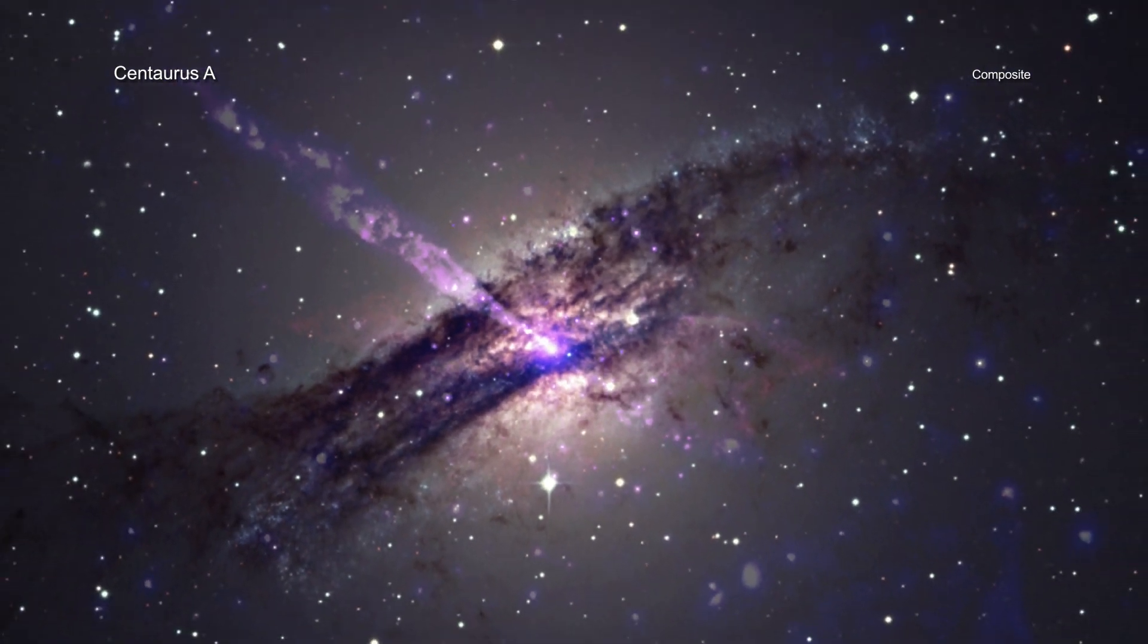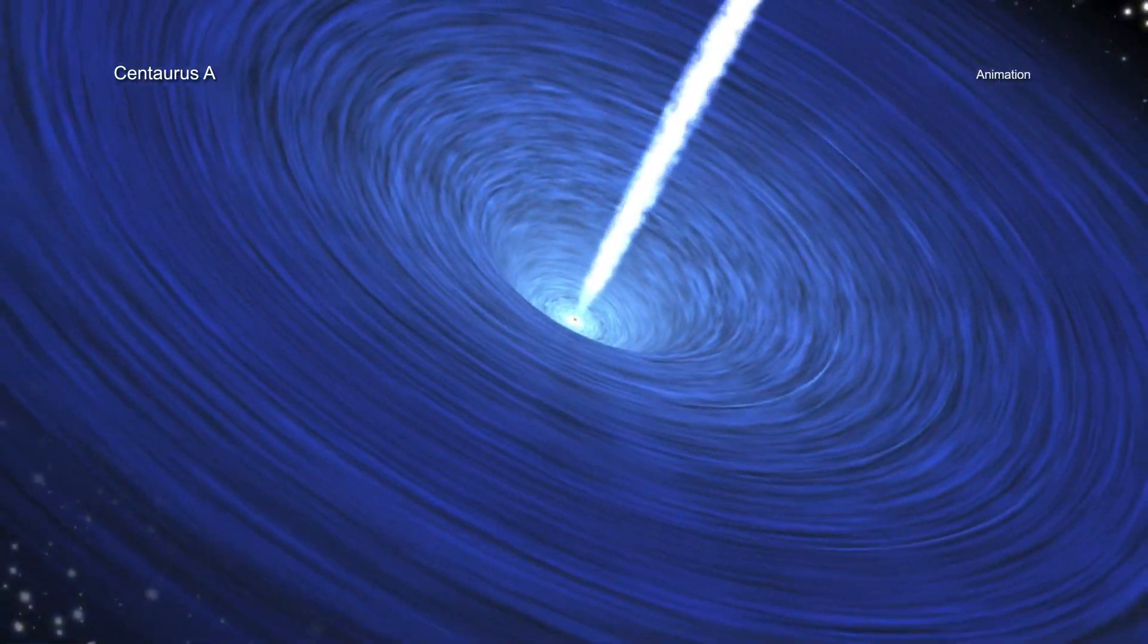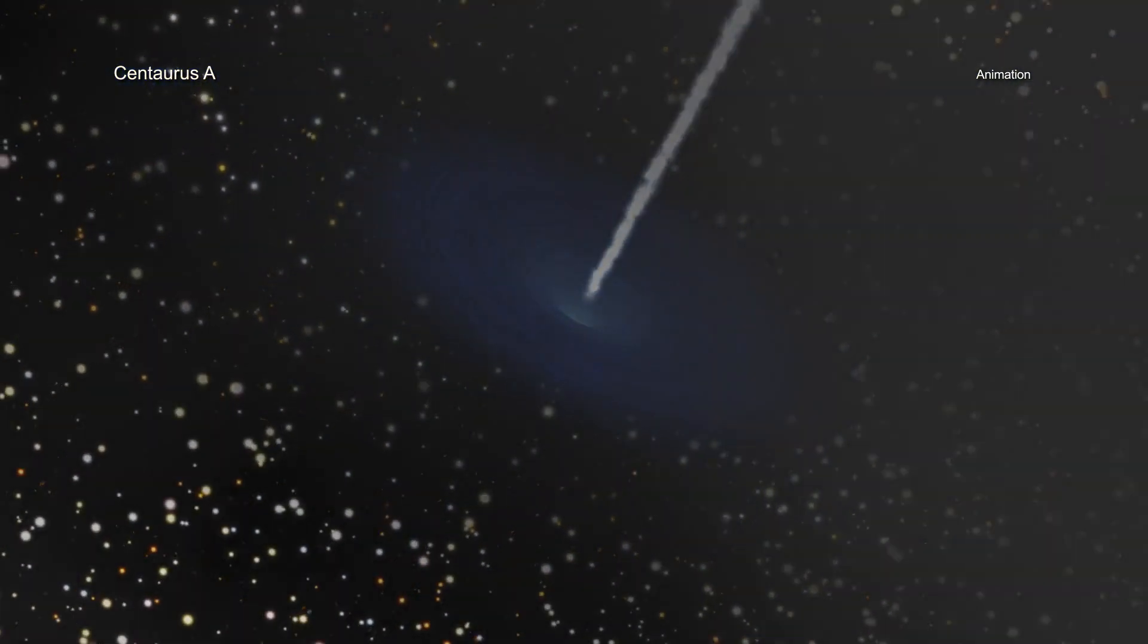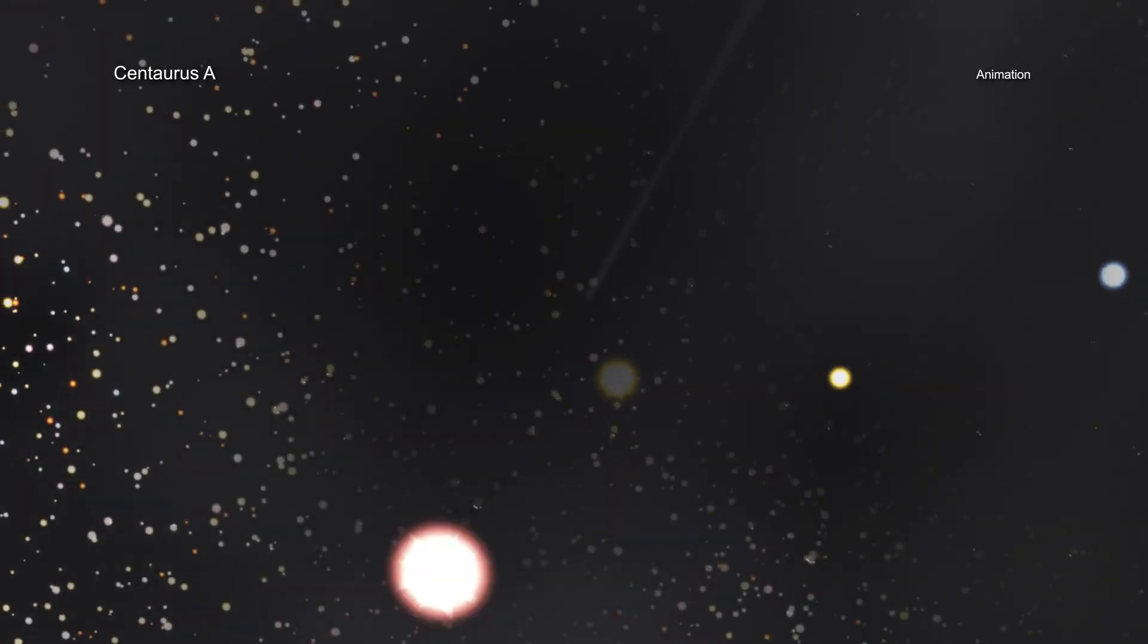Astronomers have long studied Cen A because it has a supermassive black hole in its center sending out spectacular jets that stretch out across the entire galaxy.